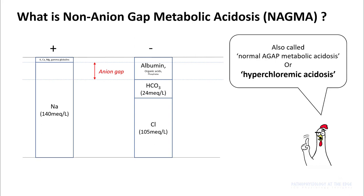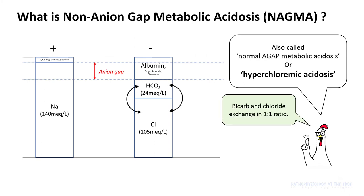If you look at this figure closely, you'll figure out that to keep your anion gap the same and have acidosis, your bicarbonate and chloride must be exchanging amongst themselves. So in non-anion gap acidosis, your bicarbonate and chloride always exchange in a one-to-one ratio.